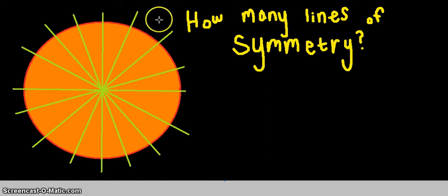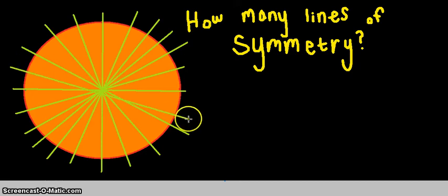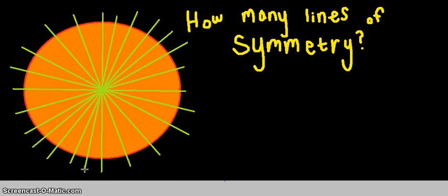Mm-hmm. We can. Nine. Ten. Eleven. Twelve. I'm running out of room. But, you know, we can keep going. So, that means that circles actually have an infinite number of lines of symmetry. Meaning that it's never-ending. It's countless. So, how many lines of symmetry does a circle have? It has a lot.